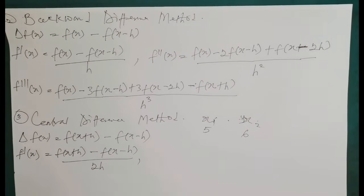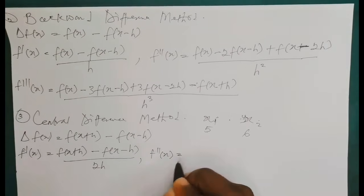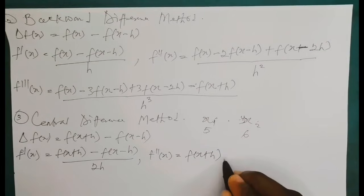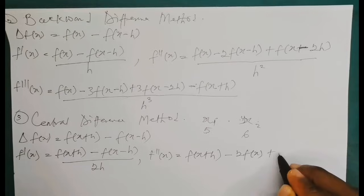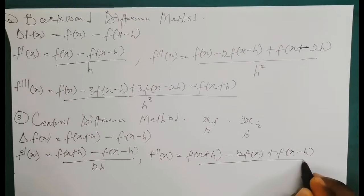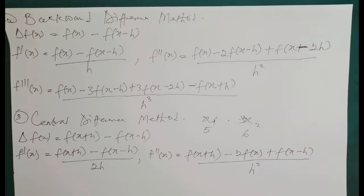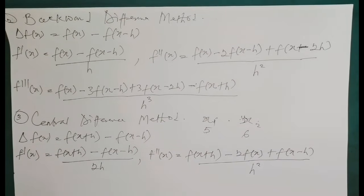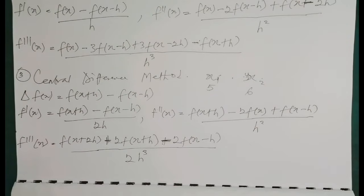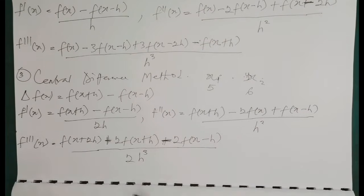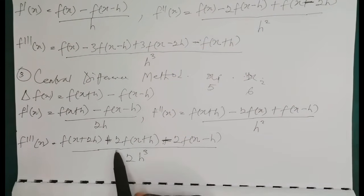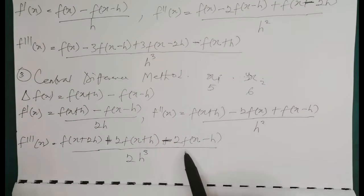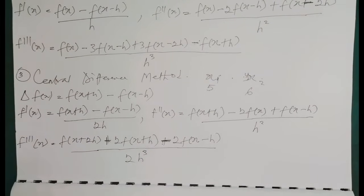For the second derivative approximation using the central difference method: f″(x) = [f(x + h) − 2f(x) + f(x − h)] / h². For the third derivative: f‴(x) = [f(x + 2h) + 2f(x + h) − 2f(x − h) − f(x − 2h)] / (2h³), where h again stands for the interval. That covers the whole idea behind finite difference methods.